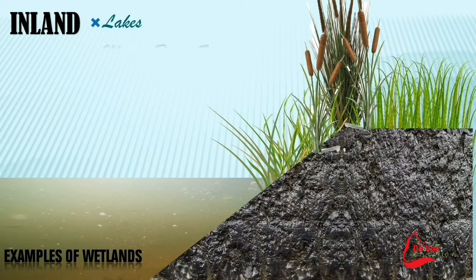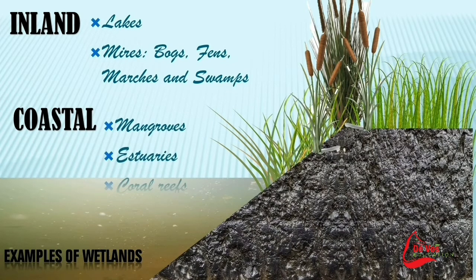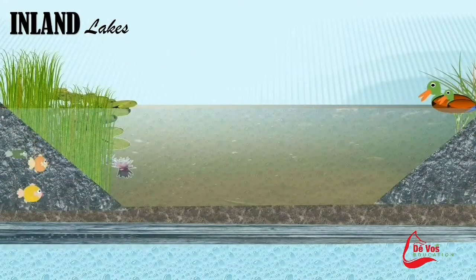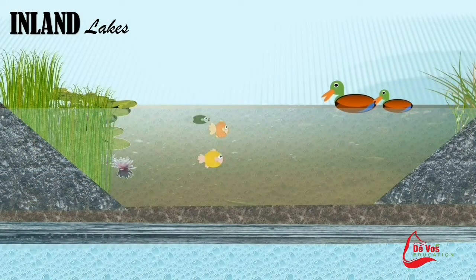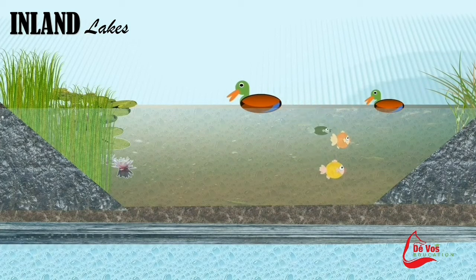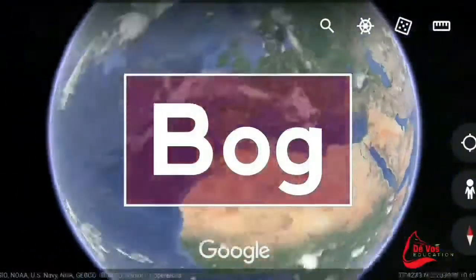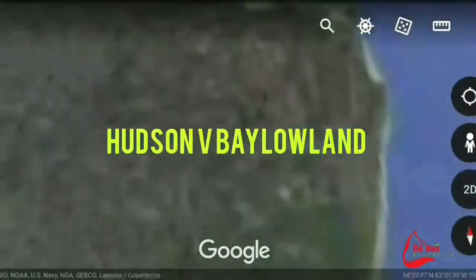There are two areas where we find wetlands: either inland or on coastal areas. Inland we divide them into lakes and mires. Mires can then be subdivided into bogs, fens, marshes and swamps. On the coastal areas we have mangroves, estuaries and coral reefs.